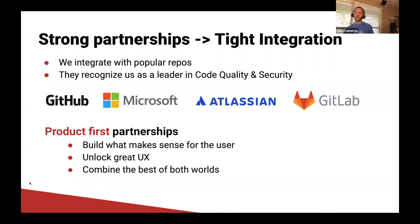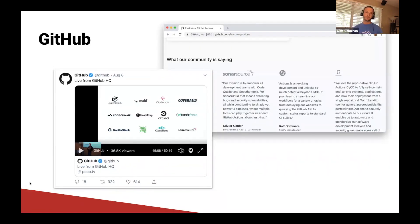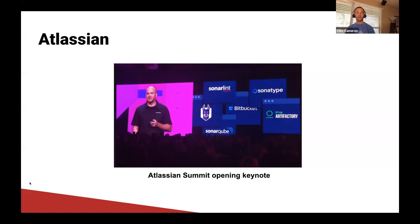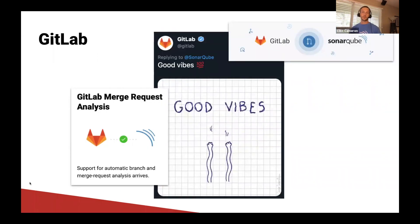With our product-first partnerships, we wanted to build what makes sense for the user and unlock the great UX that our partners had already built into their tools — combining the best of both worlds. Our partners even ask us to participate in feature launches like GitHub Actions and talk about us in their communities. These companies know us well and mention us during their keynotes. We collaborate on code quality and security best practices, get recognized as a top publisher, and we're happy to receive good vibes from our newest integration with GitLab.